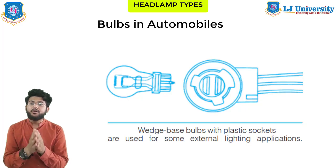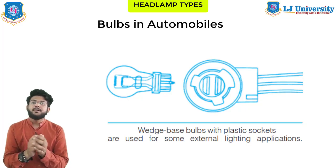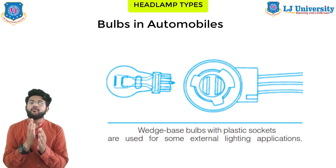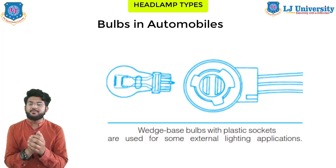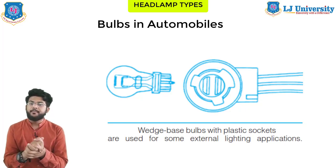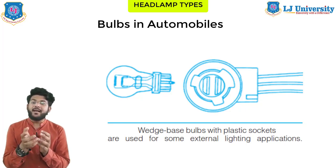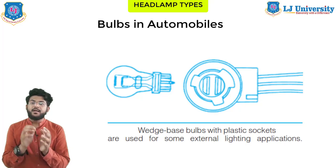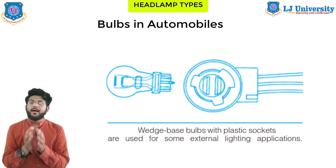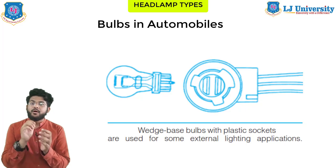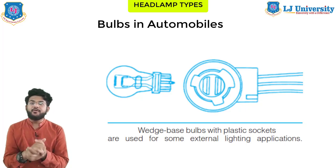That was all about the different types of lamps and bulbs in the lighting system. I hope you got a clear idea about this topic. If you have any queries, please let me know in the comments and I will try to respond as soon as possible. In the next lecture we will discuss other lamps in detail, such as hazard lamps, tail lamps, and stop lamps. Thank you so much — stay tuned, goodbye, and keep learning.